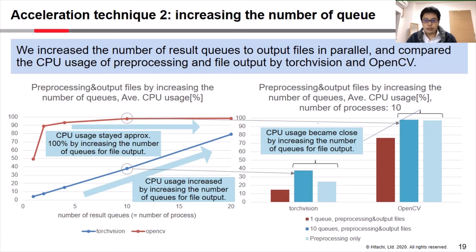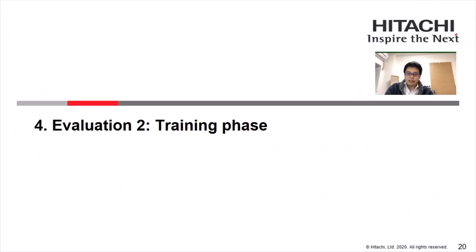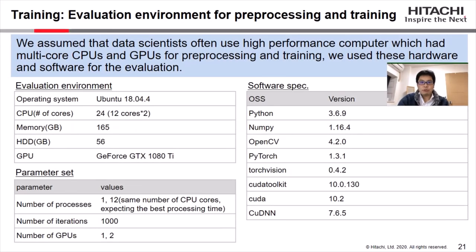Next, we are going to evaluate the effect of accelerating processing in the training phase. In the training phase, we assumed that data scientists often used high-performance computers with multi-core CPUs and GPUs for preprocessing and training. We adopted Ubuntu this time since it's better for utilizing the latest open source software.